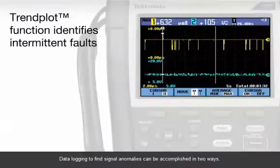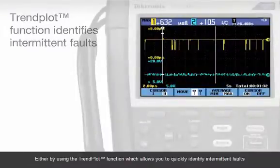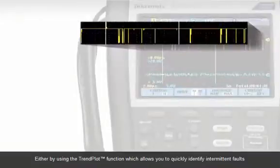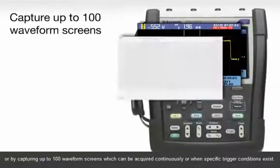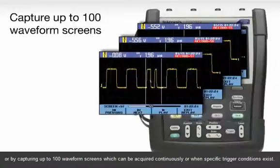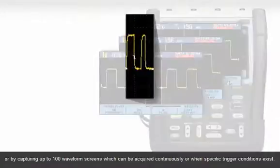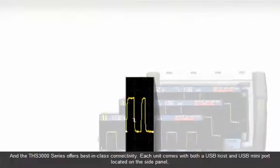Data logging to find signal anomalies can be accomplished in two ways, either by using the trend plot function, which allows you to quickly identify intermittent faults, or by capturing up to 100 waveform screens, which can be acquired continuously or when specific trigger conditions exist.